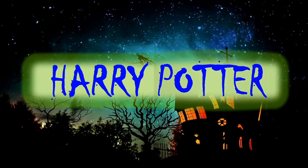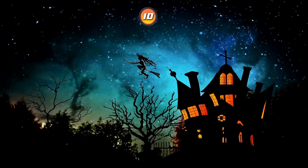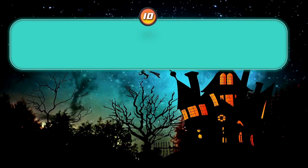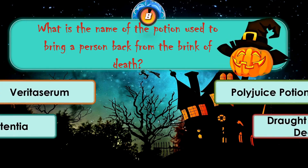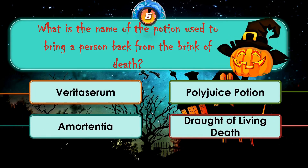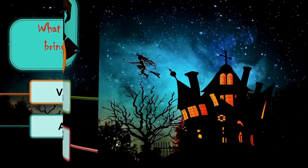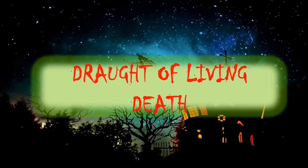Moving to next question: what is the name of the potion used to bring a person back from the brink of death? Veritaserum, Polyjuice Potion, Amortentia, Draught of Living Death. The correct answer is Draught of Living Death.